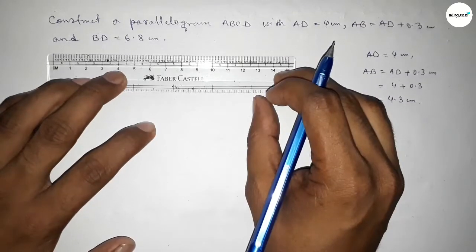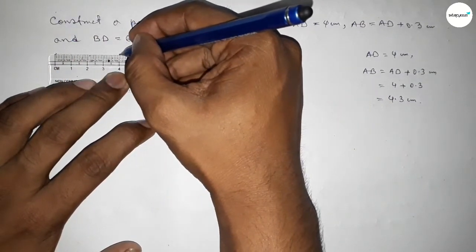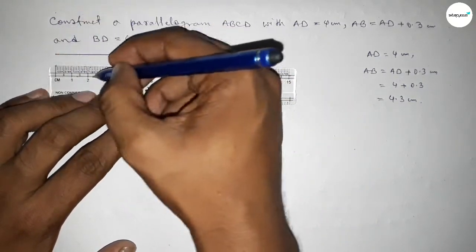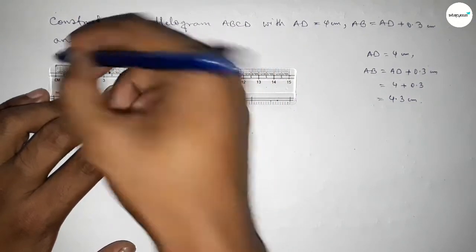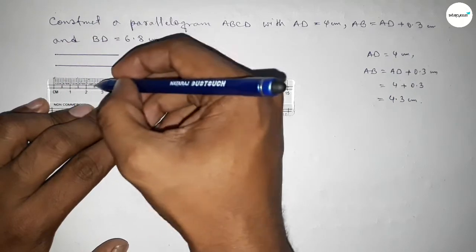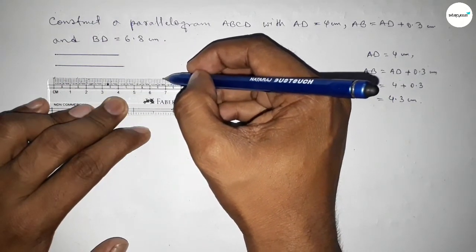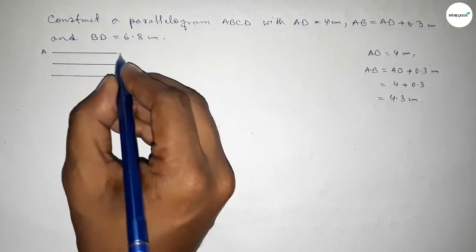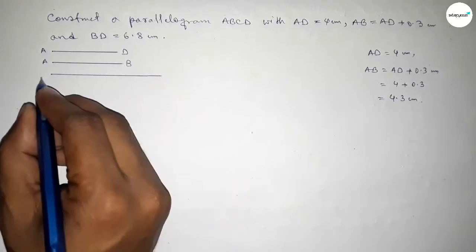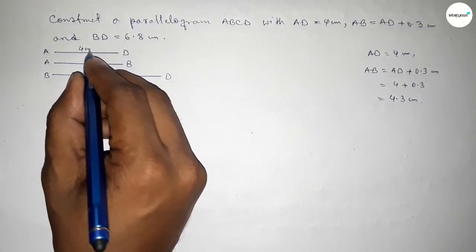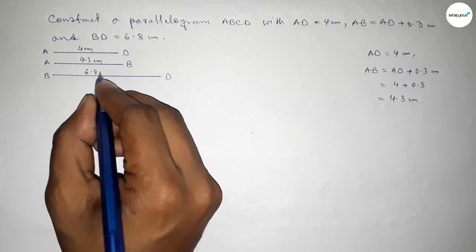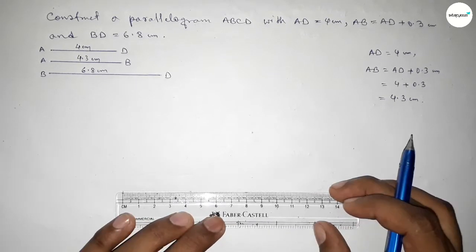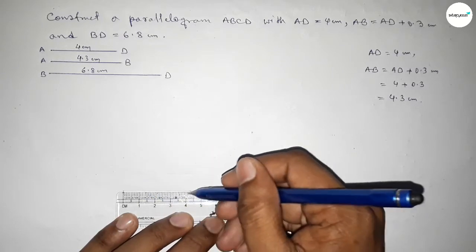First we have to draw a line of length 4 cm, then draw another line of length 4.3 cm, and lastly draw a line of length 6.8 cm. So this is the AD line (4 cm), this is the AB line (4.3 cm), and this is the BD diagonal line (6.8 cm).